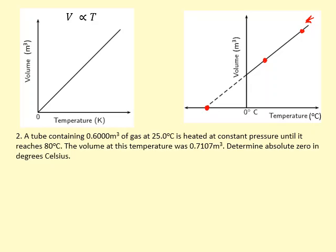Here we have two points: 0.60 at 25°C and 0.7107 at 80°C. First I'm going to make the equation of a line. Y equals mx plus c. To find the gradient, change in y over change in x, making sure you do that the right way around. I get 0.002 0127.